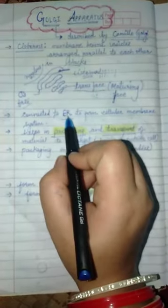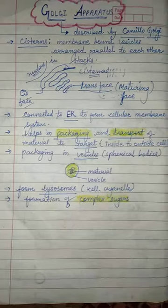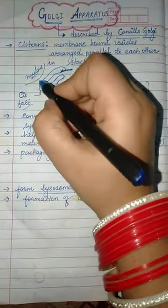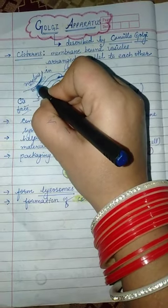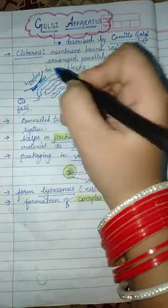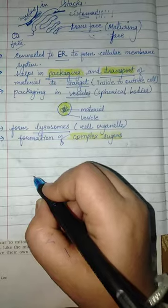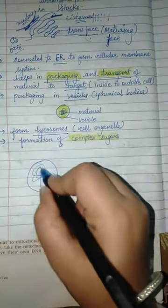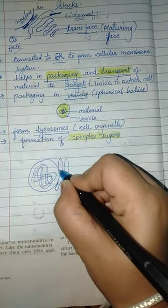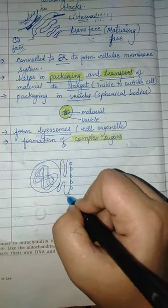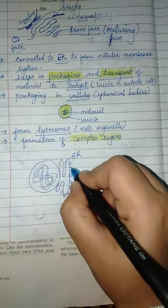The Golgi apparatus is connected to the endoplasmic reticulum. So here we have the nucleus, and associated with the nucleus is the endoplasmic reticulum. This is a very important relationship — the nucleus is here, and the rough endoplasmic reticulum (RER) is connected to it.